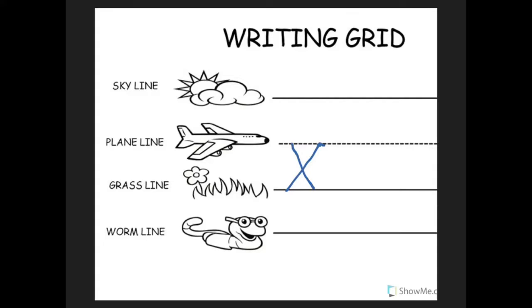X. Fox, x. X is at the end of the word fox. Y. Y is a plain line slide letter. Put your pencil on the plain line, slide down to the grass line, stop, lift your pencil, put it about here, pull, and slide down to the worm line. Y, yellow, y.